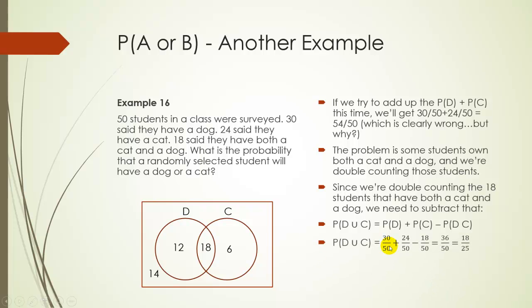So that gives us 30 out of 50 plus 24 out of 50 minus 18 out of 50, gives us 36 out of 50. Or simplifying, 18 out of 25 students have either a dog or a cat.